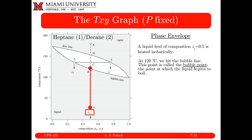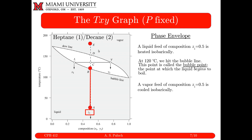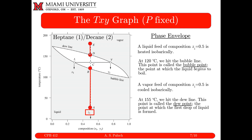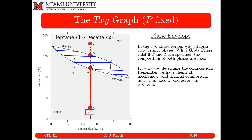Continuing to heat the mixture: at my bubble line my first bubble forms. Similarly, if I start with a vapor mixture of Z equals 0.5 and cool it isobarically, at 155°C I hit the dew line — that's where my first liquid drop forms. Between 120°C and 155°C, between the bubble point and the dew point for that mixture, I have a two-phase mixture. I'm within my phase envelope and phase splitting occurs.